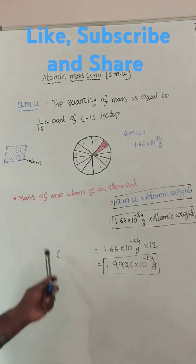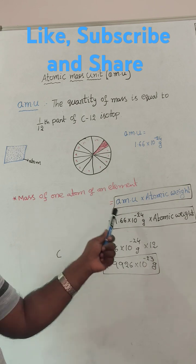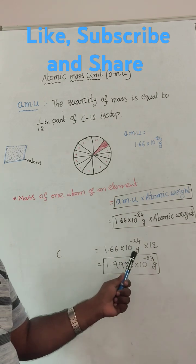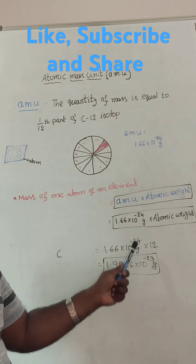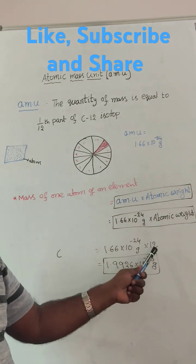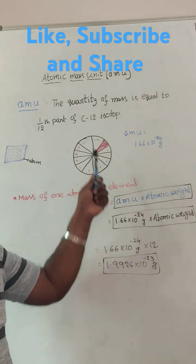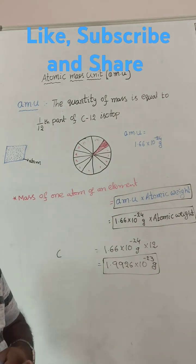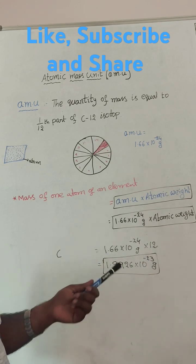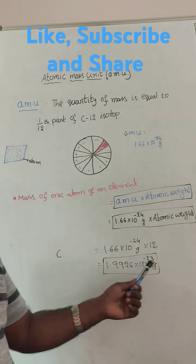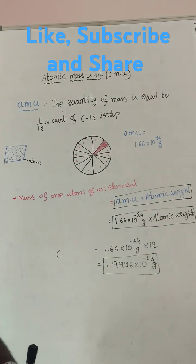At the time, mass of one atom of carbon is equals to 1.66 into the power of minus 24 grams into total of how many parts? Carbon of 12, into 12. We will get the value 1.66 into the power of minus 23 grams.